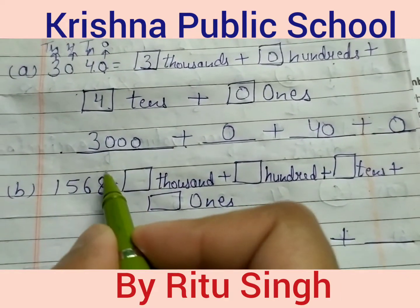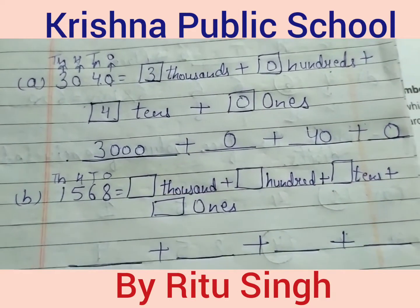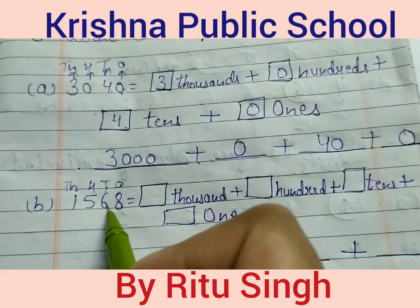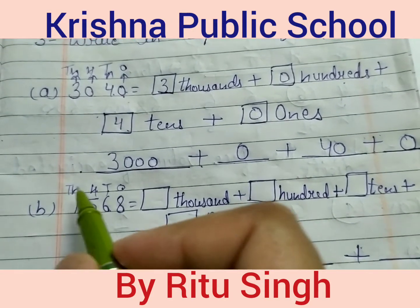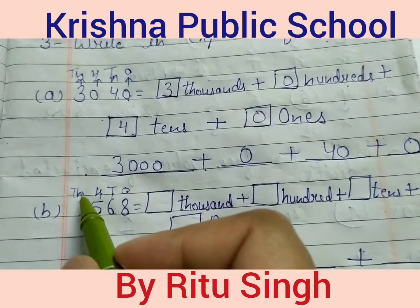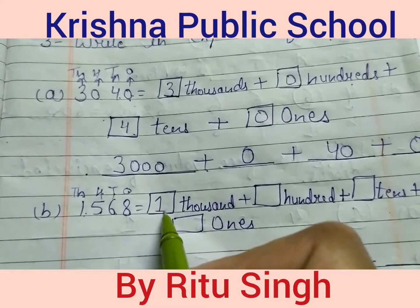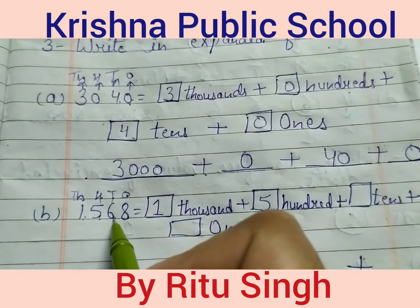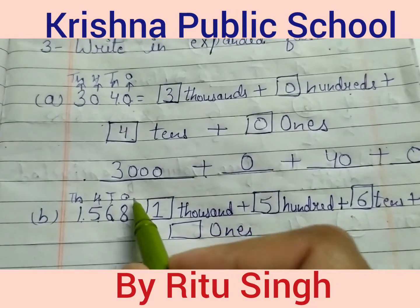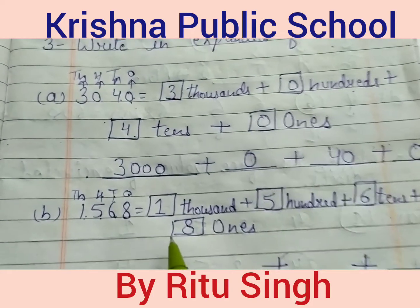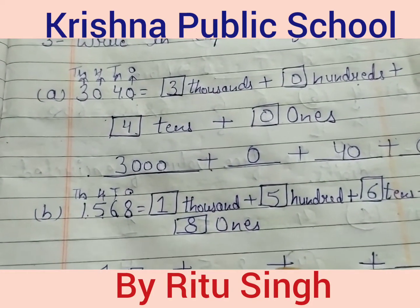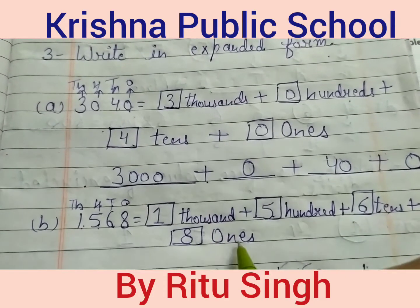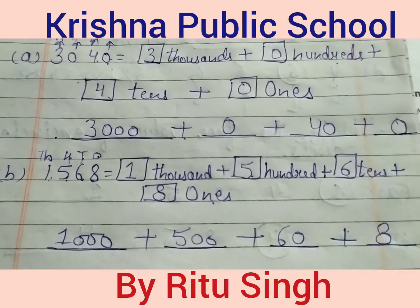Next number — places are ones, tens, hundreds, thousands. On the place of thousands, digit is 1 — write 1. On the place of hundreds, digit is 5 — write 5. On the place of tens, digit is 6 — write 6. On the place of ones, digit is 8 — write 8. So write 1000 plus 500 plus 60 plus 8. This is the answer.